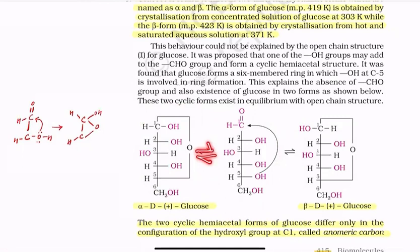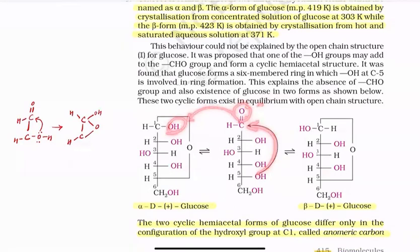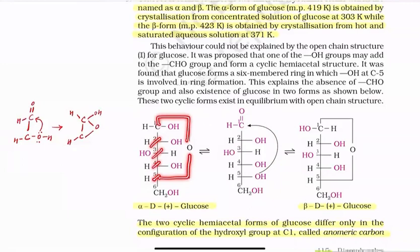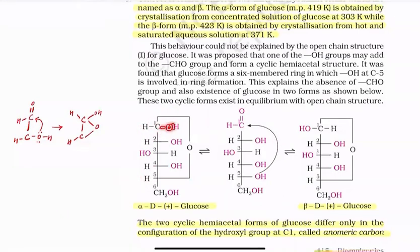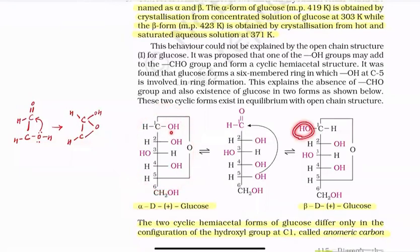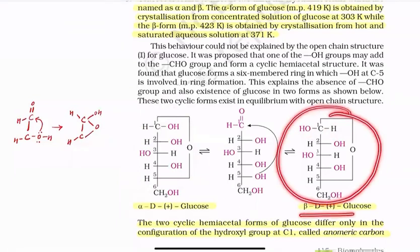The linear and cyclic forms exist in dynamic equilibrium with each other. When this OH attacks the carbonyl group, converting it into a hydroxy group, the carbon at C1 becomes a new optically active carbon because it now has four different groups. So glucose, which had 4 optically active carbons in linear form, now has 5 optically active carbons in cyclic form. If the new OH is on the right side, this cyclic form is called alpha-D-glucose; if the OH is on the left side, it is called beta-D-glucose.